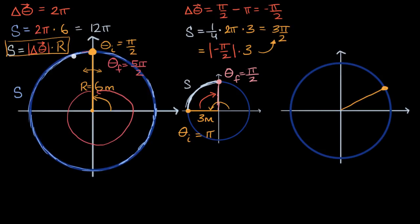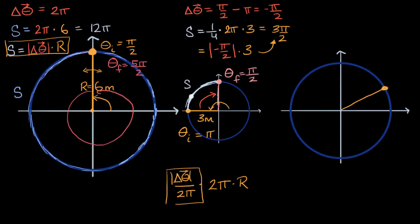It makes sense, because what you're really doing is using the traditional circumference of a circle and thinking about what proportion of the circle this arc length is. The magnitude of your angular displacement represents that proportion of the full circumference. If it's two pi, you cover the entire circle; if it's pi, you cover half. These cancel out, giving you arc length.